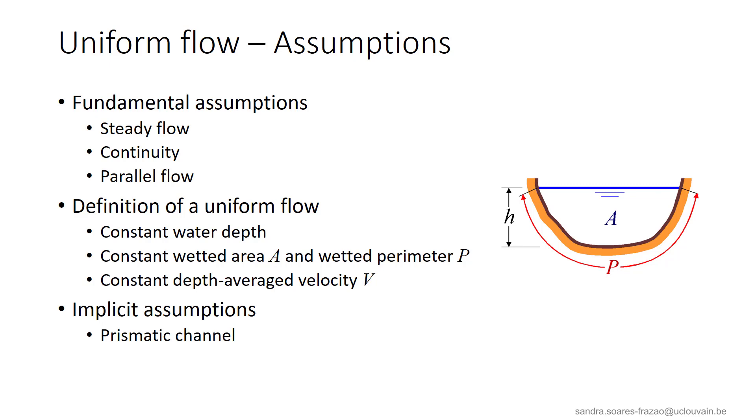Let's start with the uniform flow. Besides the fundamental assumptions, some additional elements of definition have to be added. A uniform flow is defined as a flow with a constant water depth, constant wetted area and wetted perimeter, and a constant depth-averaged velocity. This assumption implies that the channel has to be prismatic.